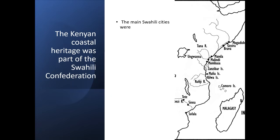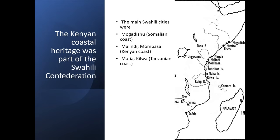The main cities were Mogadishu on the coast of Somalia — and that usually surprises Somalis to know that their history is connected to Swahili history — Malindi and Mombasa on the coast of Kenya, Mafia and Kilwa off the coast of Tanzania, Sofala off the coast of Mozambique, and Sina, Mozambique inland.